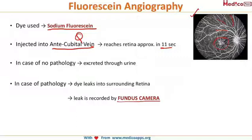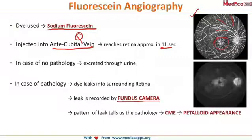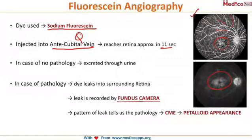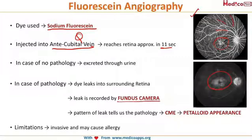The characteristic finding for cystoid macular edema is the famous petaloid appearance, or flower petal appearance. Whenever you see this kind of flower petal appearance on fundus angiography, you diagnose it as cystoid macular edema. The limitation is that it is an invasive procedure, and some patients can react badly, ending up with bronchospasm or cardiac arrest.